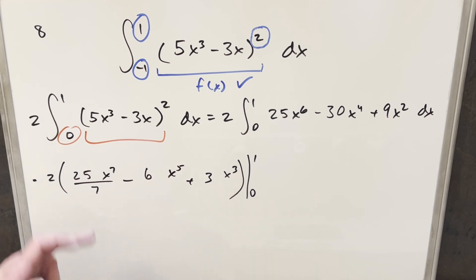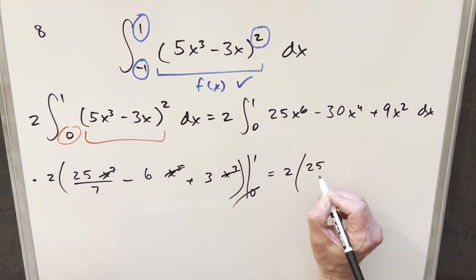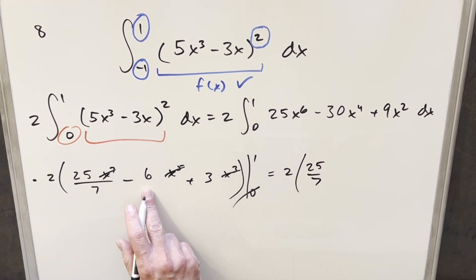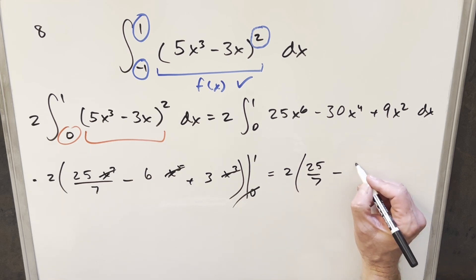But if you evaluate it at 0, you can see everything is going to be 0. So we're not going to worry about the 0 part. And when you evaluate at 1, like 1 cubed, 1 to the 5th, 1 to the 7th, those are all 1. So I'm just going to kind of cross those off. So to simplify this, I'm going to have this 2 up front. We're going to have this 25 over 7. Here, we're going to have 3 minus 6, which is minus 3. In order to get a common denominator, I can write this as minus 21 over 7.